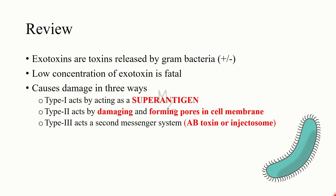Quick recap: exotoxins are toxins released by gram bacteria, both positive and negative. Their low concentrations are fatal compared to endotoxins, which require higher concentrations. They damage cells in three ways — type 1 acts as a superantigen; type 2 damages and forms pores in cell membranes; and type 3 acts via a second messenger system using the AB toxin or injectosome.